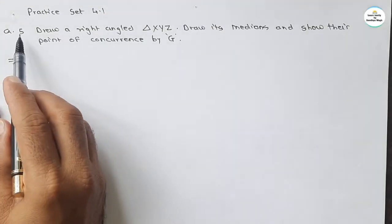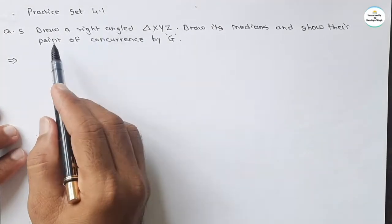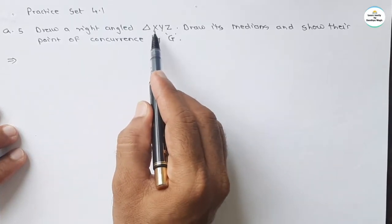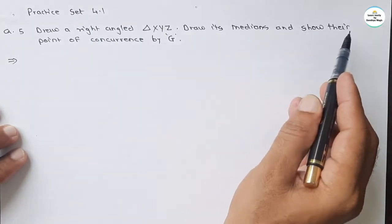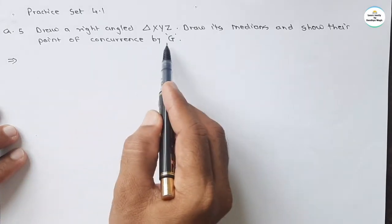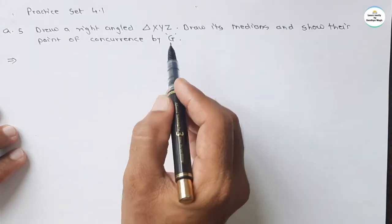See question number five of practice set 4.1: Draw a right angled triangle XYZ, draw its medians and show their point of concurrence by G. Point of concurrence G.